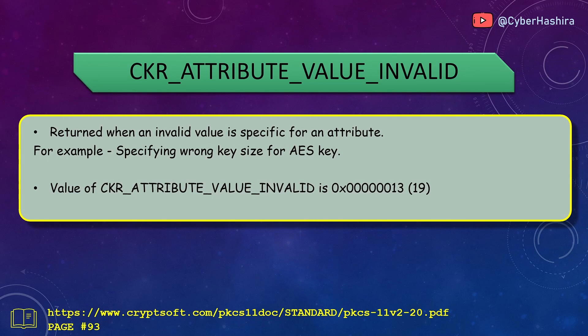CKR_ATTRIBUTE_VALUE_INVALID is returned when an invalid value is specified for an attribute. For example, an AES key can be 16, 24, or 32 bytes. If a wrong key size is specified while generating an AES key, CKR_ATTRIBUTE_VALUE_INVALID is returned. Its value is 13 and can be read about on page 93.